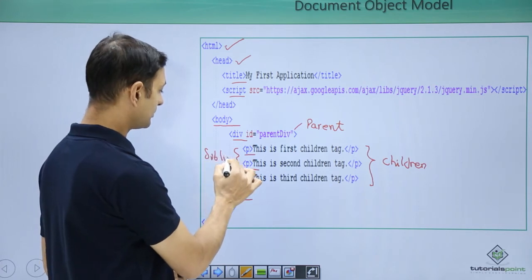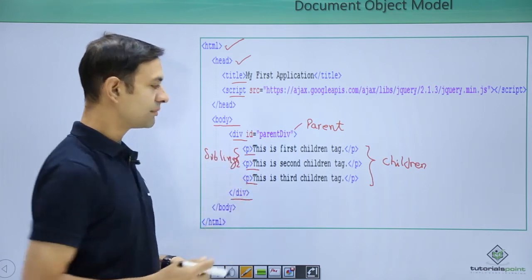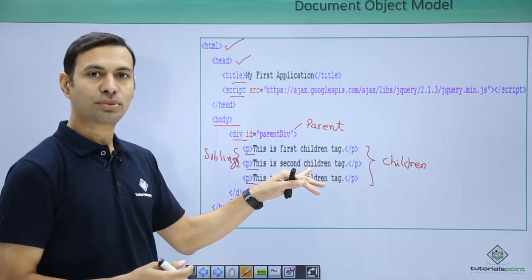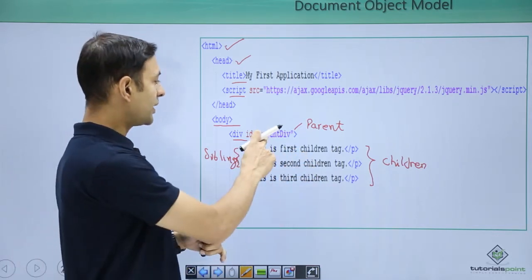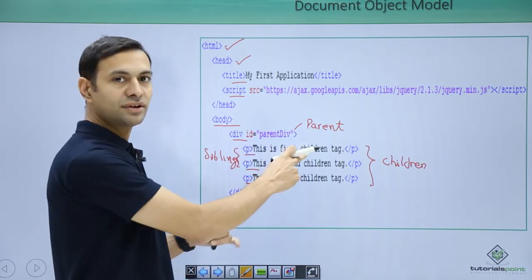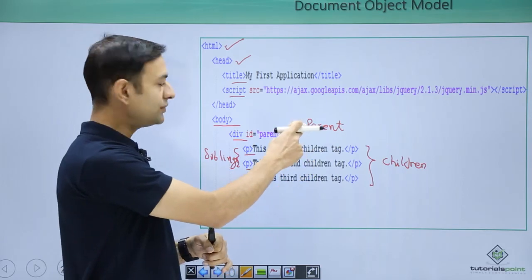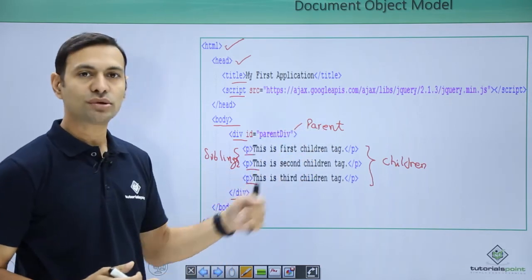The benefit of these nomenclature is, if you want to identify who is the parent of paragraph tag, we have parent div. Parent div is the paragraph tag's parent. Similarly, this is first child of parent div. That is how a DOM is structured.